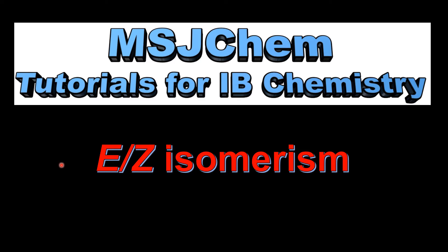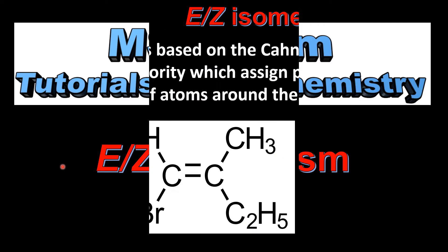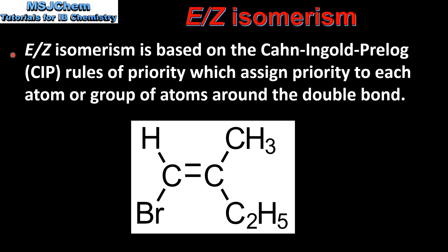This is MSJChem. In this video I'll be looking at EZ isomerism. EZ isomerism is based on the Kahn-Ingold-Prelog rules of priority, which assign priority to each atom or group of atoms around the double bond.